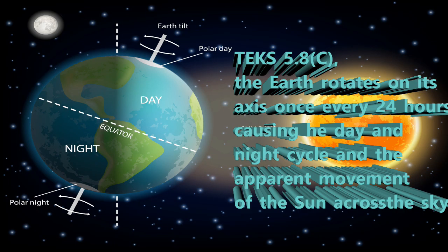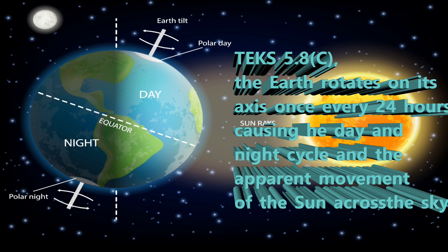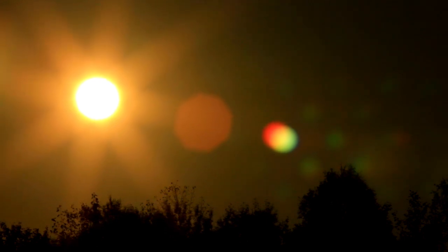This concept is part of TEKS 5.8C, which explains that Earth rotates on its axis once every 24 hours, causing the day and night cycle and the apparent movement of the Sun across the sky.